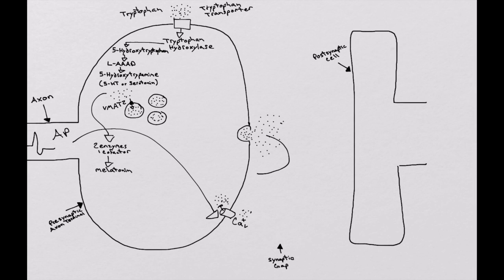A few things can happen from here. One of the things that can occur is it can bind back onto the presynaptic axon terminal to receptors which are either auto-receptors or heteroreceptors. Or they can bind to effector cells on the postsynaptic cell and activate those, causing a response depending on what receptor it's activating. Or it can be brought back into the presynaptic axon terminal.